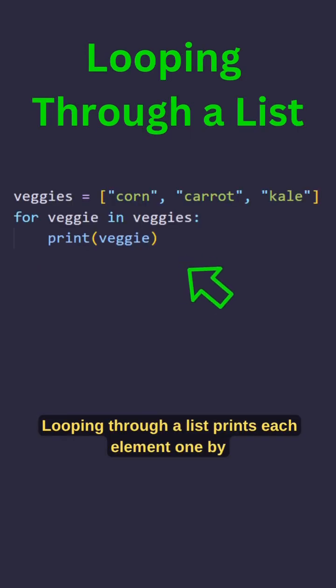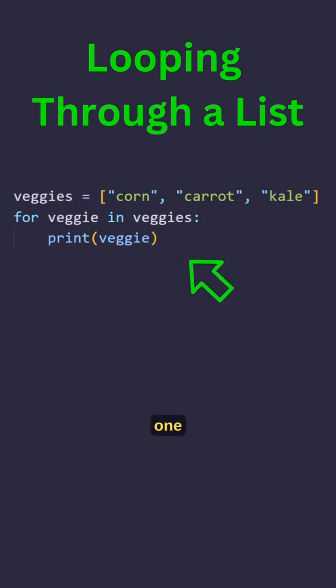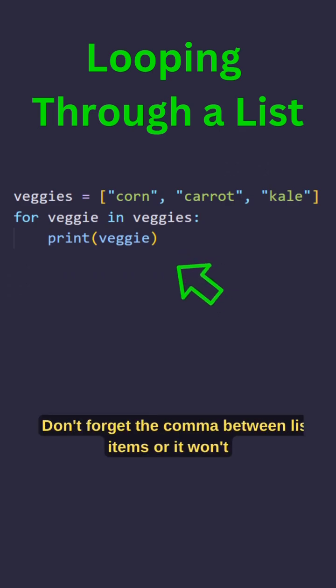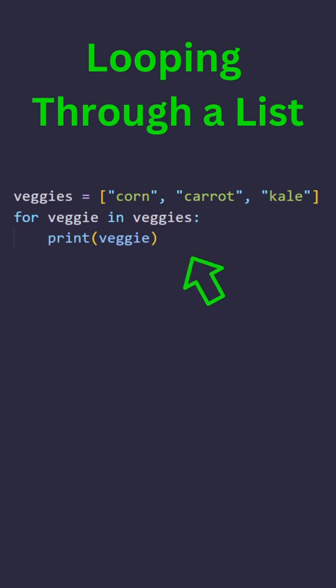Looping through a list prints each element one by one, avoiding manual index handling. Don't forget the comma between list items, or it won't print properly.